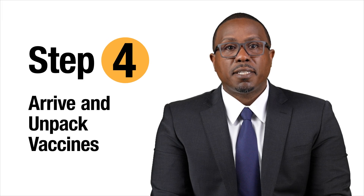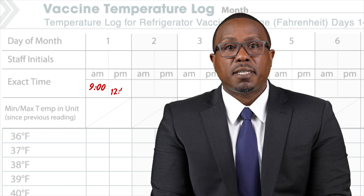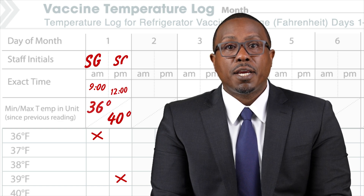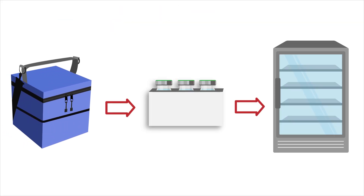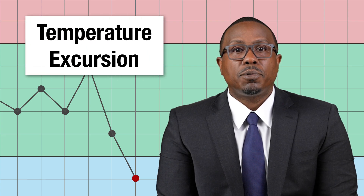Step four: arrive and unpack the vaccines at your destination. Before unpacking your vaccines at the destination, make sure to record the time, temperature, and your initials in the temperature log. Then quickly transfer the vaccines to a refrigerated storage unit or administer them by the end of the vaccine clinic day. Take immediate action if you note any temperatures outside the recommended range. This is called a temperature excursion.